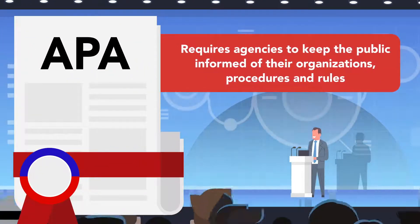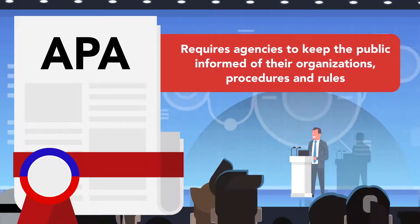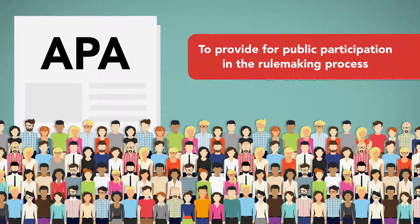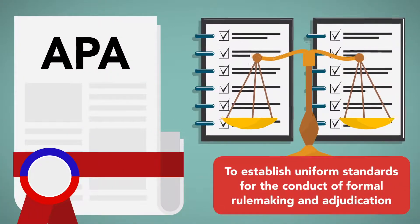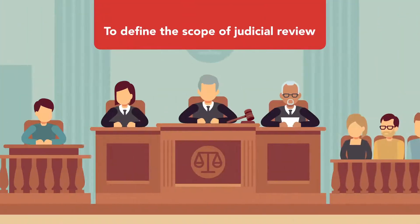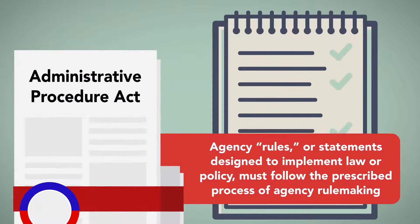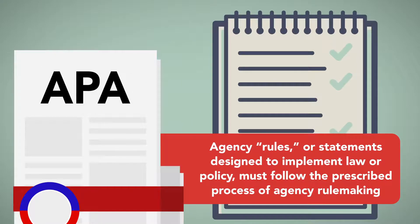The APA requires agencies to keep the public informed of their organizations, procedures, and rules, to provide for public participation in the rulemaking process, to establish uniform standards for the conduct of formal rulemaking and adjudication, and to define the scope of judicial review. The APA provides that agency rules or statements designed to implement law or policy must follow the prescribed process of agency rulemaking.